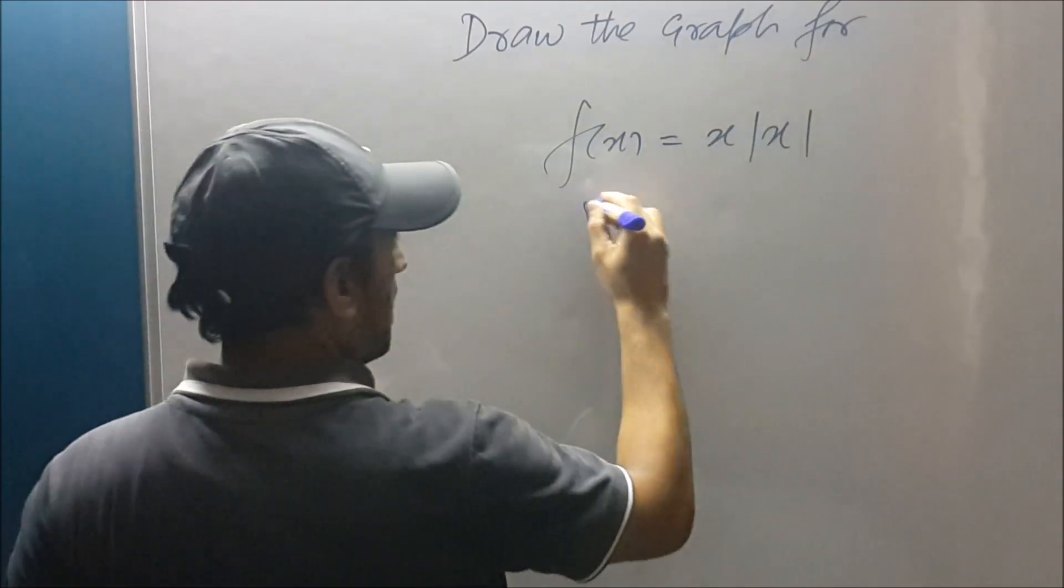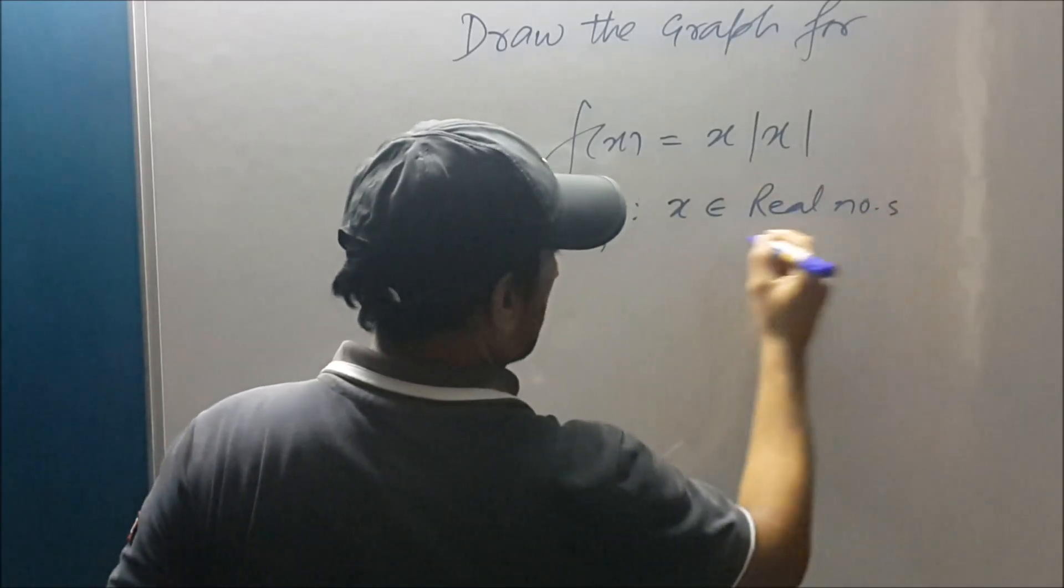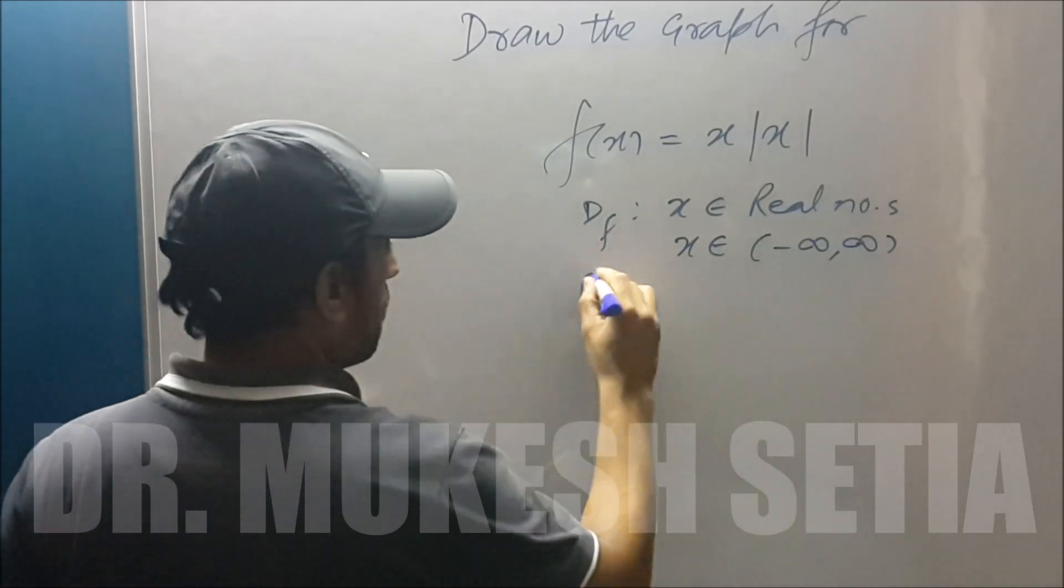So clearly the domain of the function is x belonging to real numbers. That is x belongs to minus infinity to infinity and so will be the output.